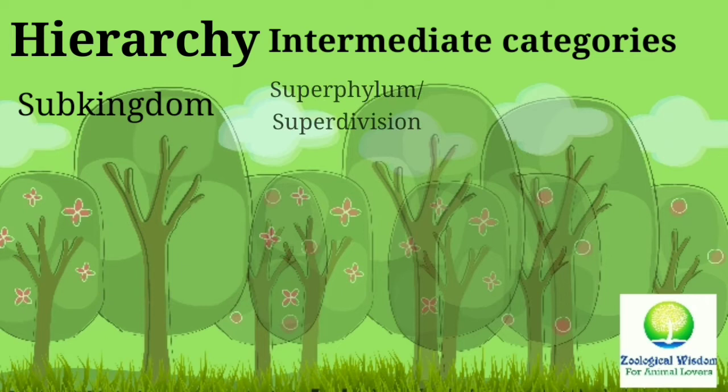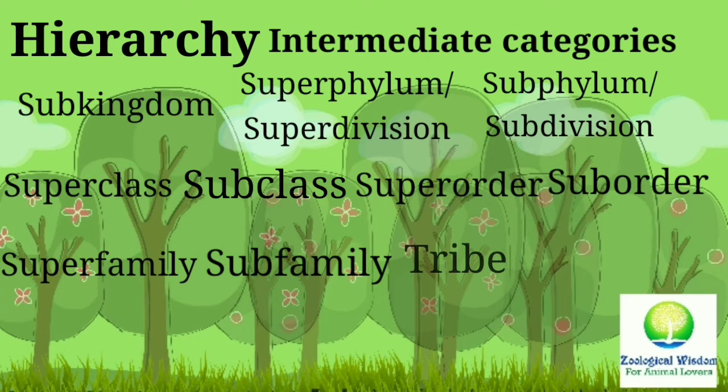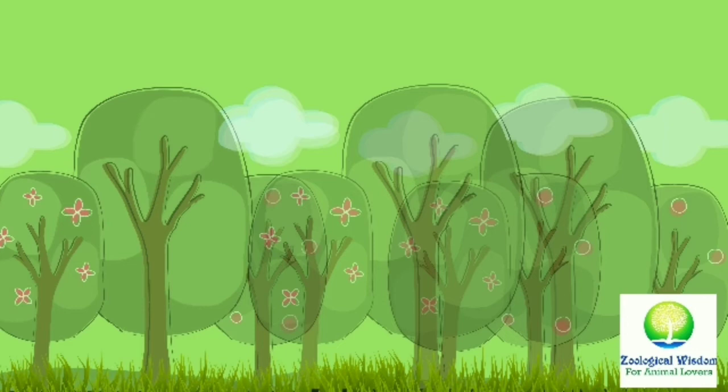Examples of intermediate categories include: Subkingdom, Superphylum or Subdivision, Subphylum or Subdivision, Superclass, Subclass, Superorder, Suborder, Superfamily, Subfamily, Tribe, and Species, among others.